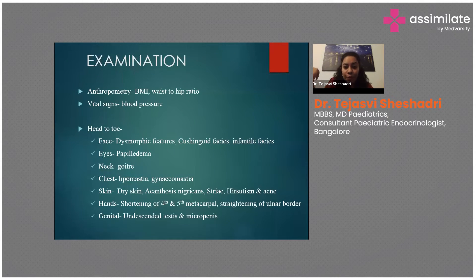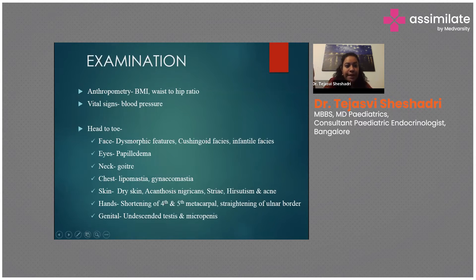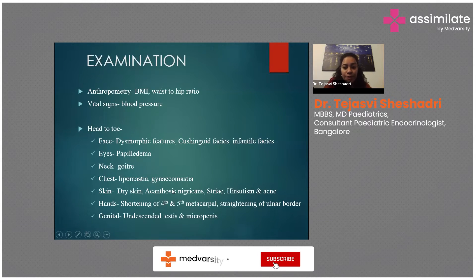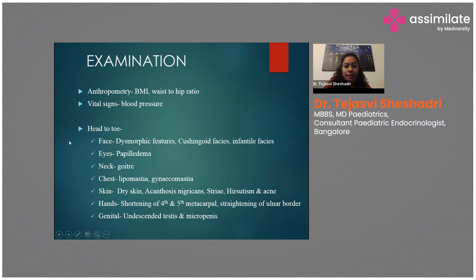In pathological causes, look for dysmorphic features. Cushing's features include buffalo hump and moon facies. Infantile facies is characteristic of growth hormone deficiency, as is cleft lip or cleft palate. Check eyes for papilledema suggesting pseudotumor cerebri; neck for goiter suggesting hypothyroidism; chest for gynecomastia or lipomastia. On skin, look for dry skin in hypothyroidism, striae in Cushing's, hirsutism and acne in PCOD, and acanthosis nigricans as a clear marker of insulin resistance — found at the nape of the neck, groin, and axilla.